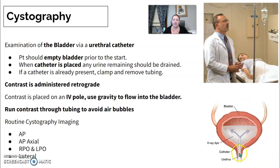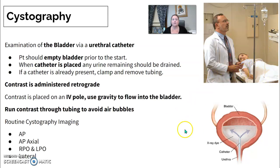With the catheter in, we're going to fill the bladder. There may be some different positioning used, but patients are mainly supine with the image intensifier over the top of the pelvis. They may also be put into oblique positions or a lateral position for better visualization.